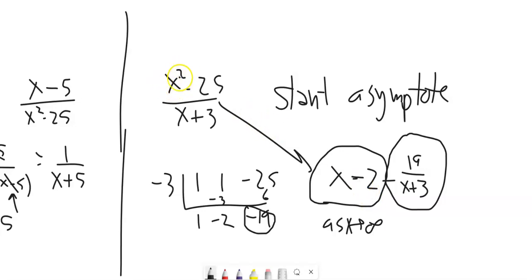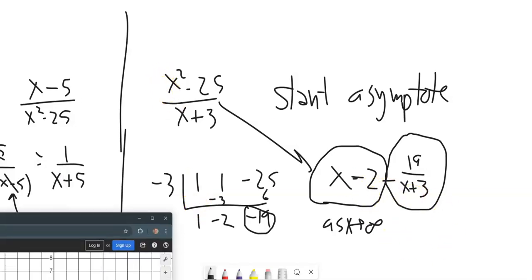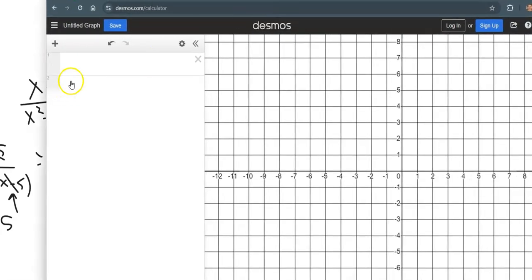So if you've got one degree apart, higher degree in the top, you can actually do the division, and it shows you where the slant asymptote is. Let me grab Desmos and graph this so you can see what I mean.